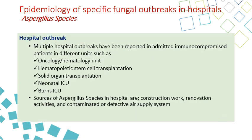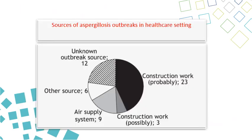Hospital outbreaks have been reported among immunocompromised patients, especially in oncology and hematology units, hematopoietic stem cell transplant units, solid organ transplant units, neonatal ICU, and burns ICU. The source of Aspergillus species is construction work, renovation activities, and contaminated or defective air supply systems. Construction and defective air supply are the major causes of Aspergillus spores that can cause lung infection or severe aspergillosis.